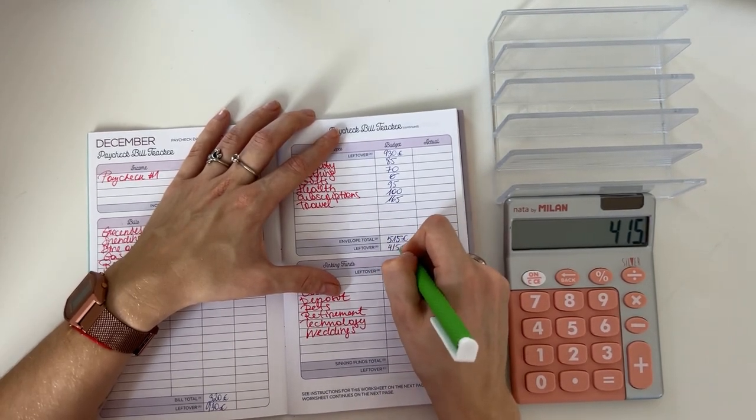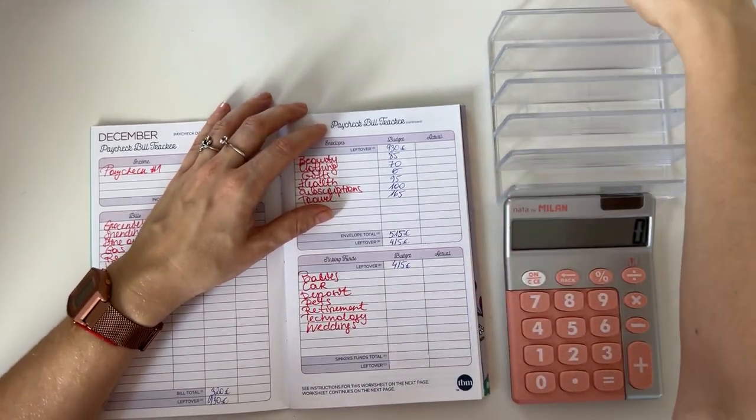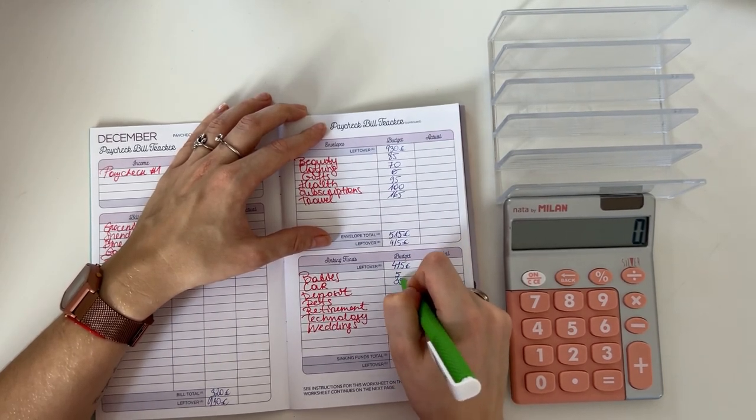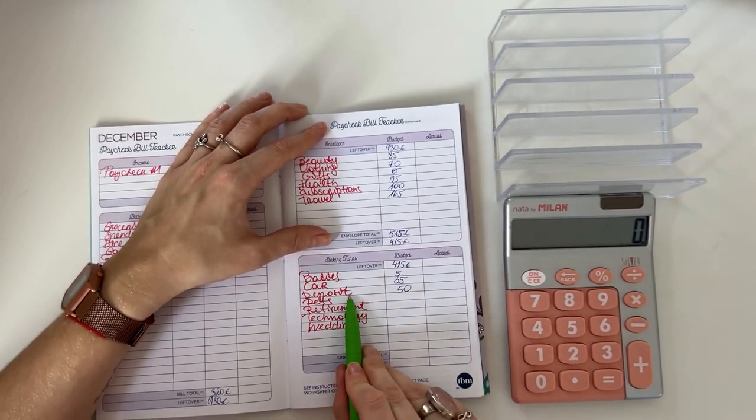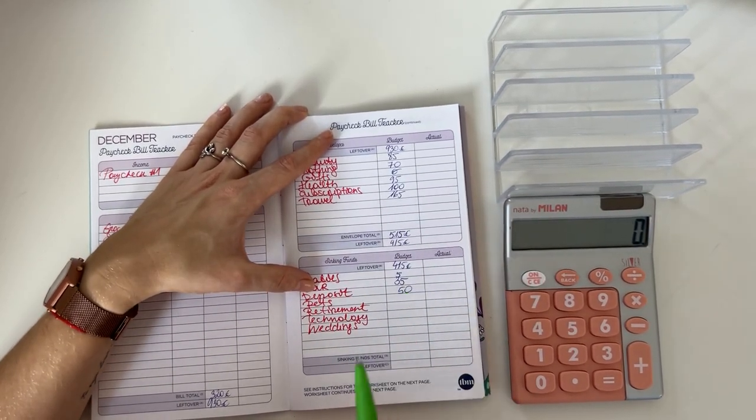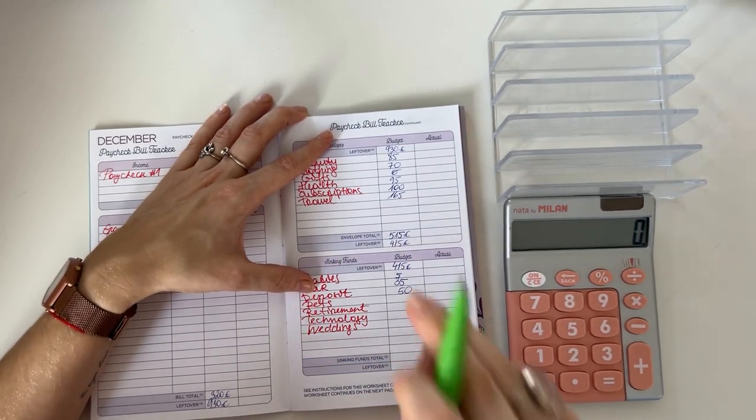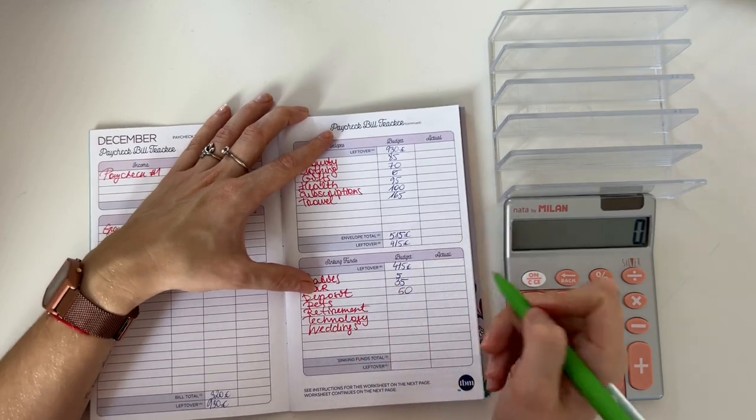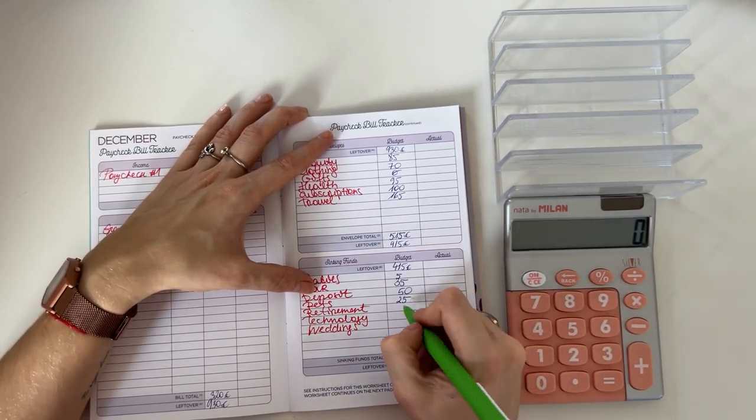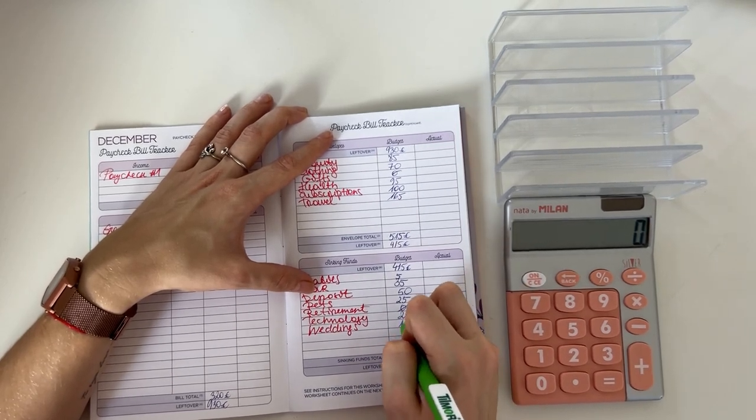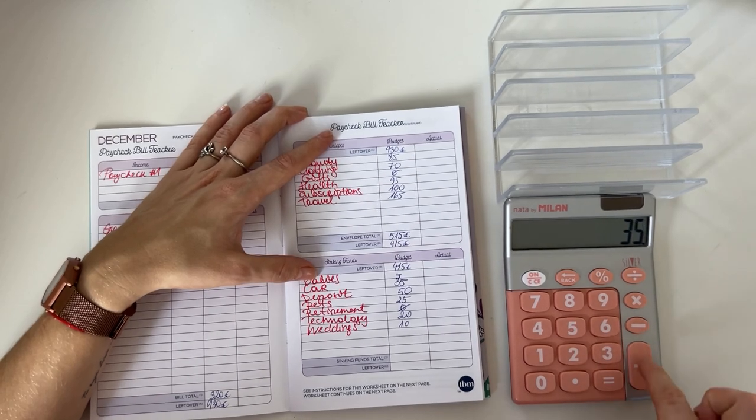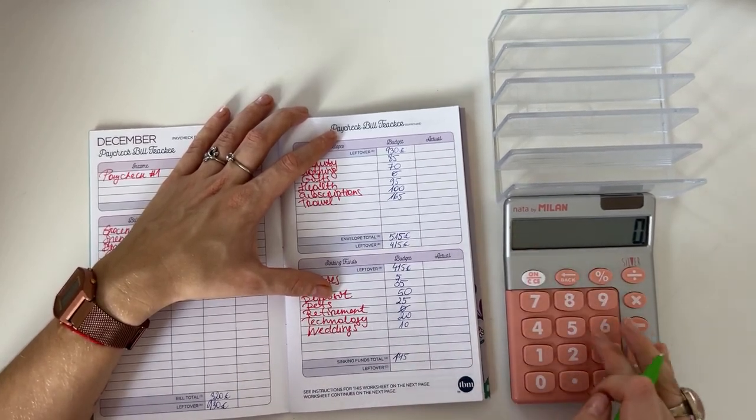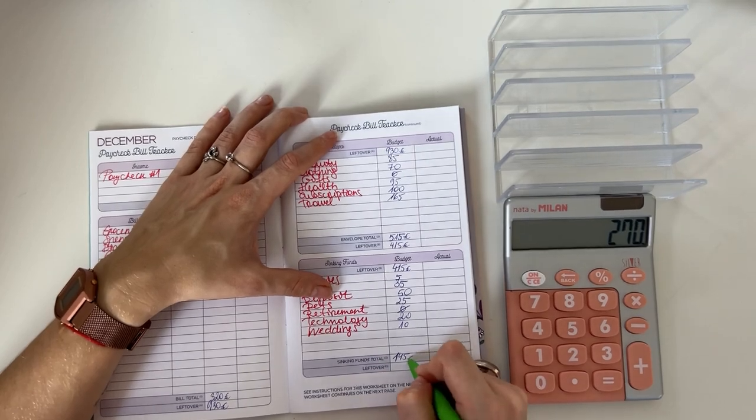415 euros we're taking down to long-term sinking funds. We are going to put 5 into babies, car is going to have 35, deposit is getting 50, and I do believe that's the last 50 we need to be fully done for the year. Pets is getting 25, nothing in retirement, technology is going to get 20, and weddings 10. So 5 plus 35 plus 50 plus 25 plus 20 plus 10 is 145. I don't usually put that much in long-term sinking funds, but I have the funds so why not.